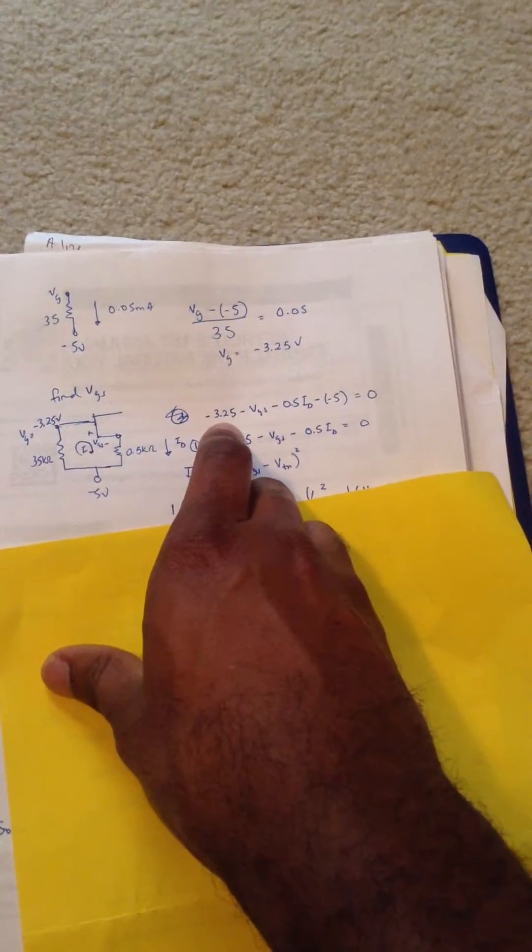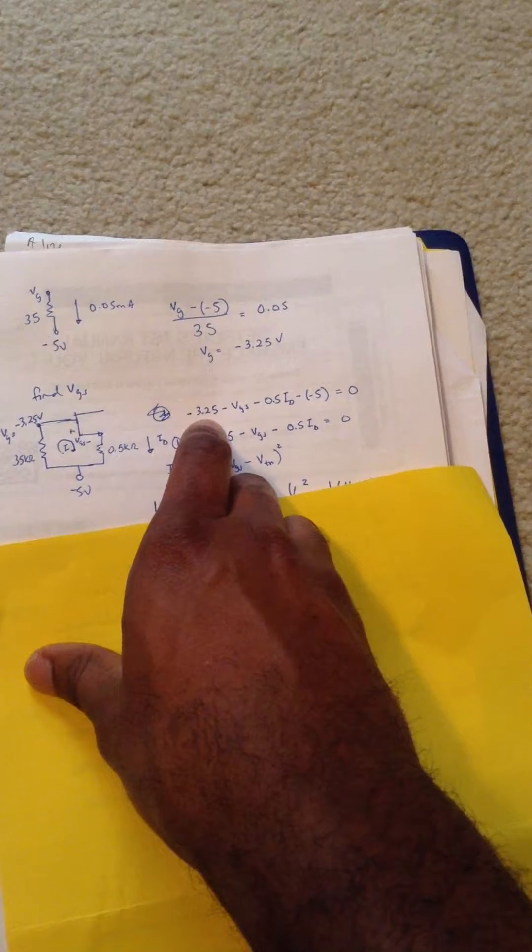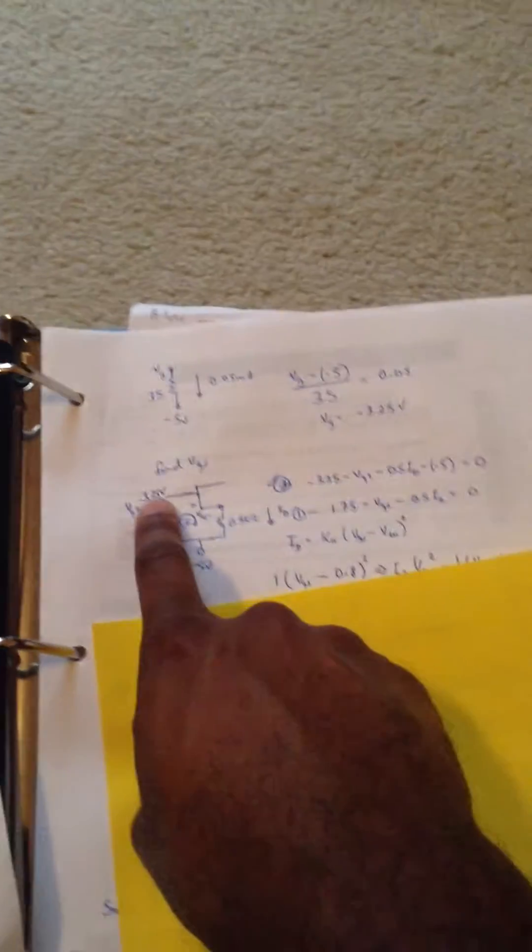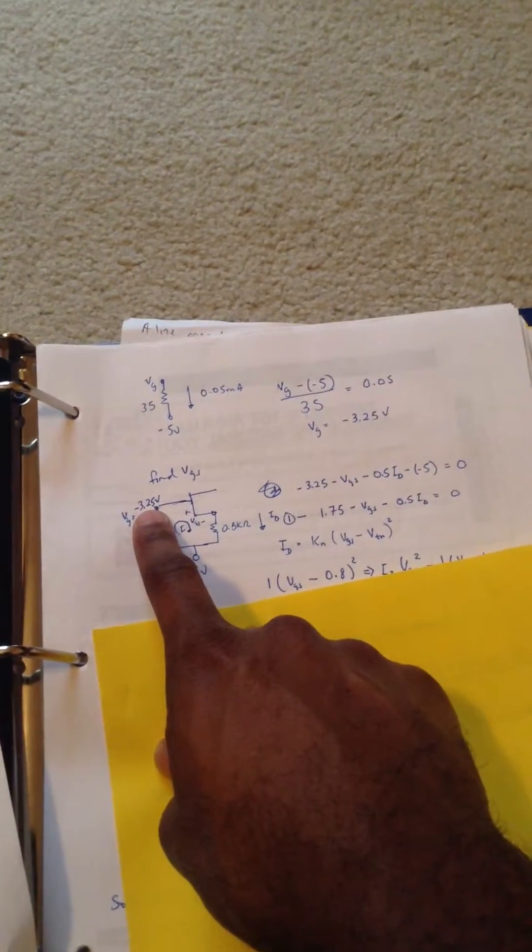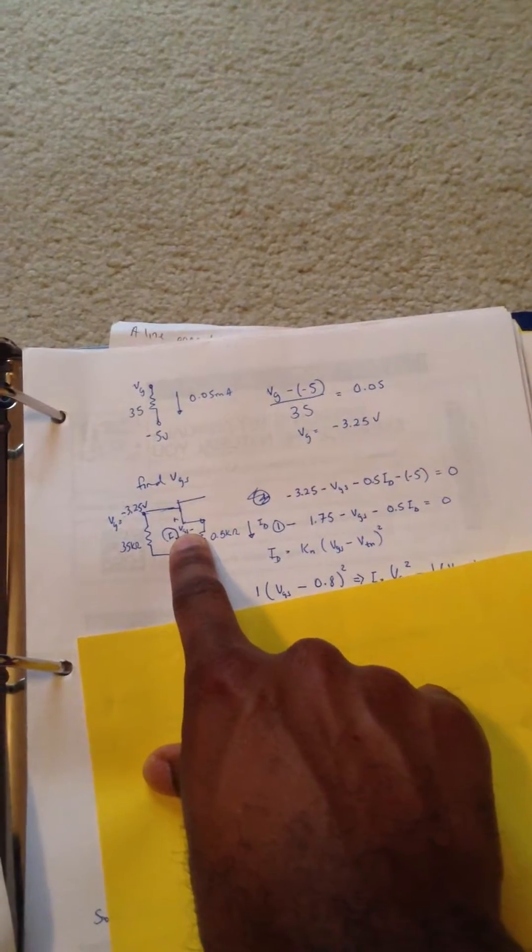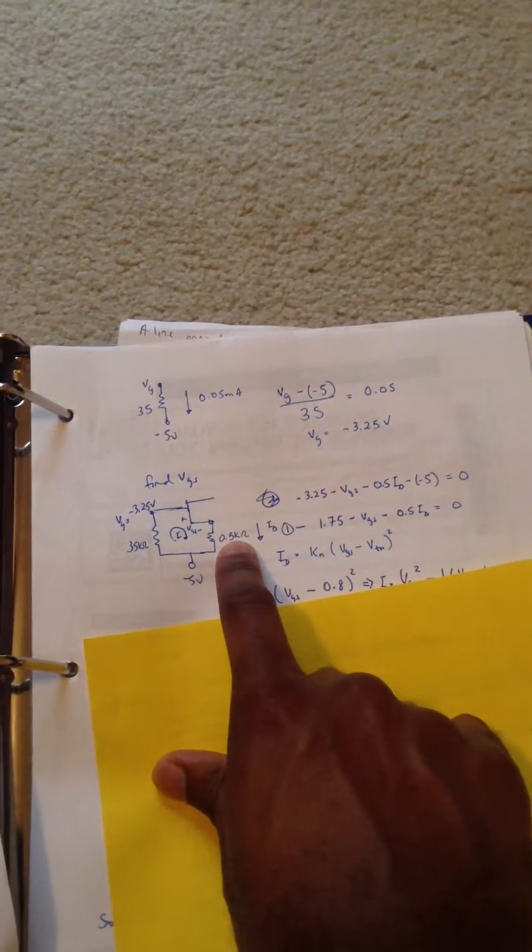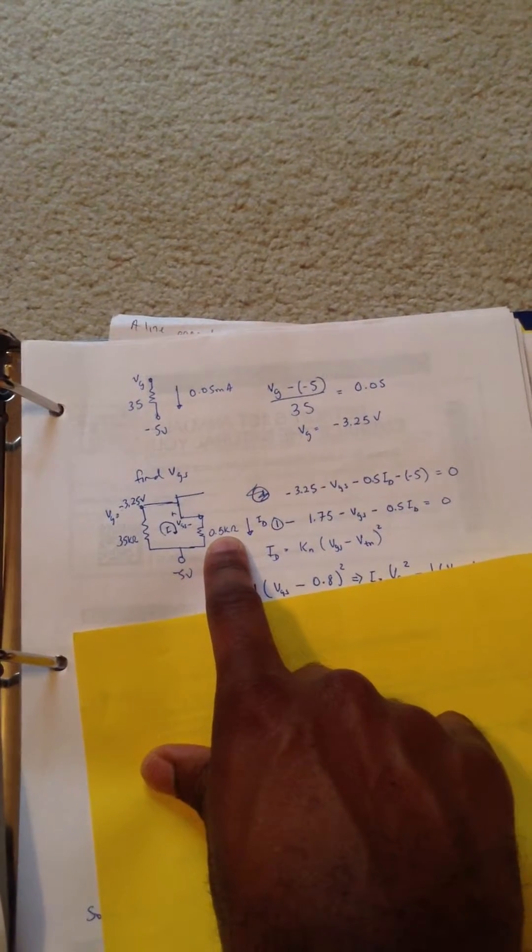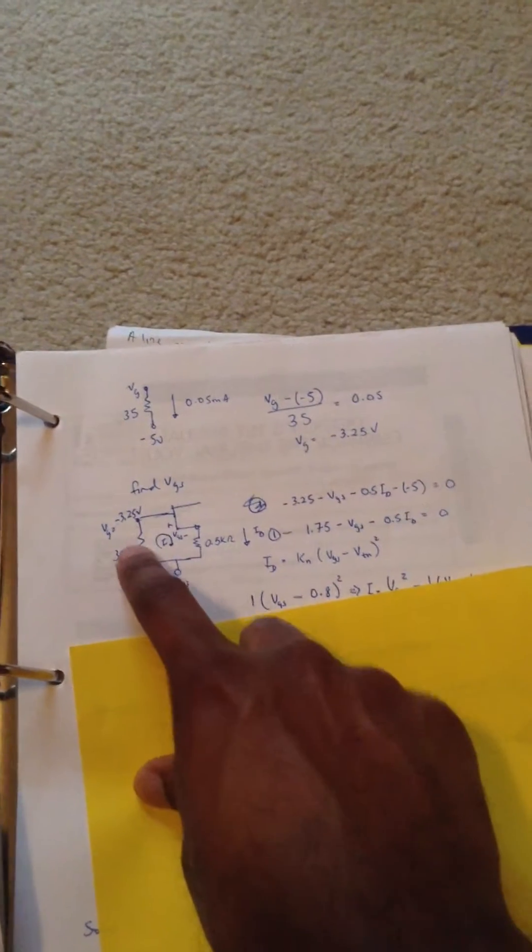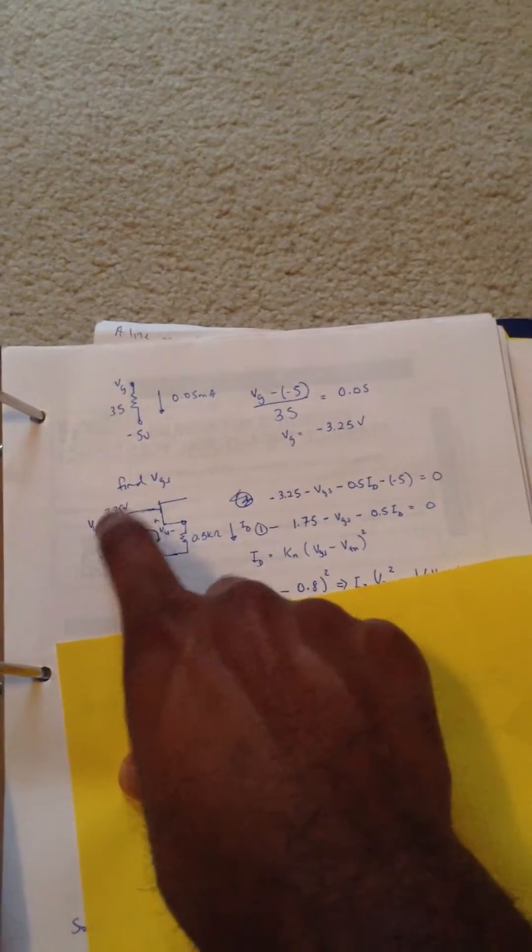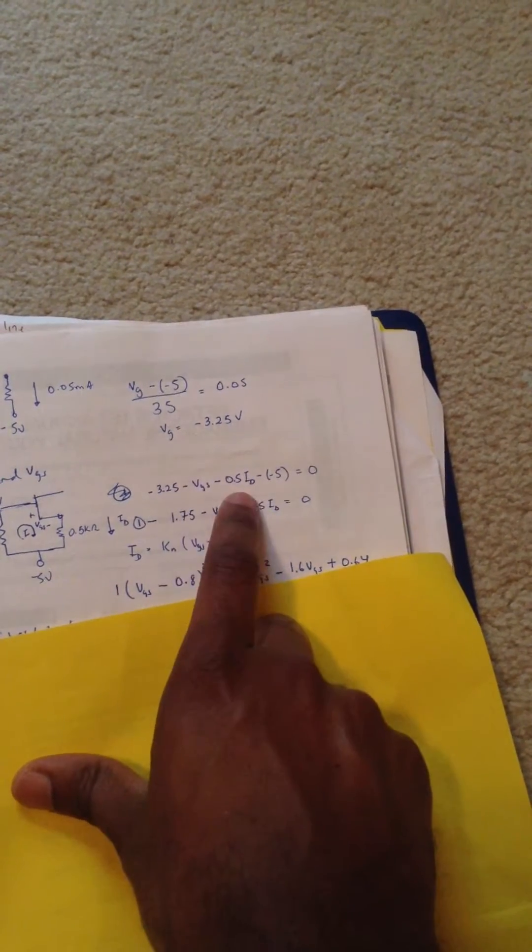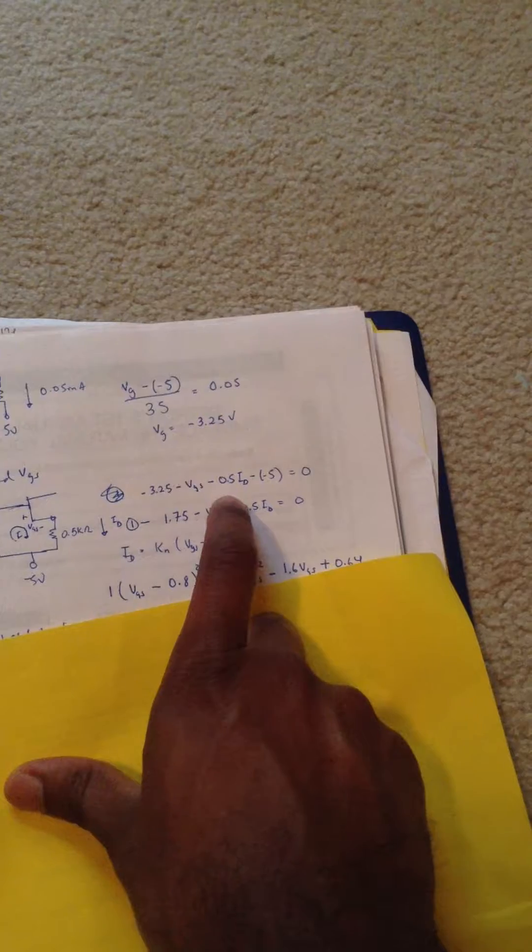We're starting at the gate voltage, which is negative 3.5 minus VG. Okay, we'll start here. Negative 3.5 volts. I'm going to go through here. Minus VGS minus ID times 0.5 minus negative 5 volts. We don't need to include that because that's included in this VG here. And that's what this is. Simplify. We still have two unknown variables.